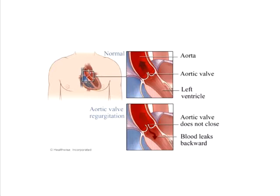Aortic regurgitation is a condition where the aortic valve fails to close completely after the blood is ejected out of the left ventricle. As seen in the diagram, the upper picture indicates blood going forward in the aorta at the end of left ventricular systole with the aortic valve completely closed, preventing backflow. In the lower diagram, the aortic valve is not closing properly and blood leaks back into the ventricle.